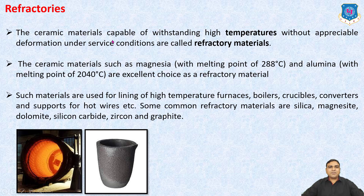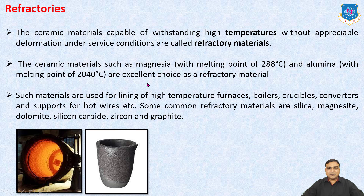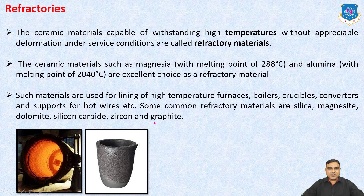Refractories: ceramic materials capable of withstanding high temperatures without appreciable deformation under service conditions are called refractory materials. Ceramics such as magnesia, with a melting point of 2800 degrees centigrade, and alumina, with a melting point of 2040 degrees centigrade, are excellent choices as refractory materials. Such materials are used for lining of high temperature furnaces, boilers, crucibles, converters, and support for hot wire. Some common refractory materials are silica, magnesite, dolomite, silicon carbide, zircon and graphite.